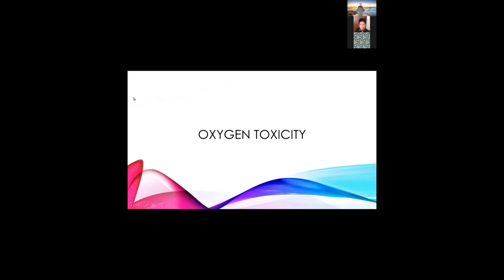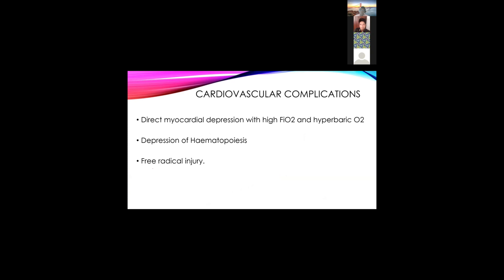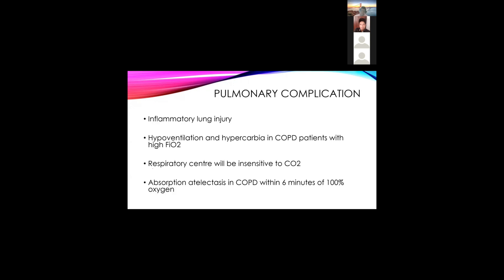As mentioned, oxygen is a medication, so if you give it, you can get side effects. If you give too much oxygen, there will be toxicity — cardiovascular toxicity as well as respiratory toxicity. Direct myocardial depression can occur when you give a high amount of FiO2 or hyperbaric oxygen — myocardial depression means negative inotropic activity. Depression of hemopoiesis can also occur; when you give higher concentration oxygen, especially for ICU patients on oxygen for months, you can get reduced hemopoiesis. Another concern is free radicals. Pulmonary complications are more related to COPD patients.